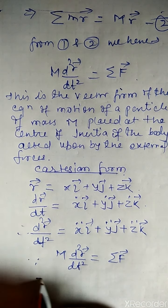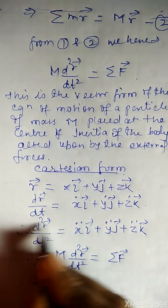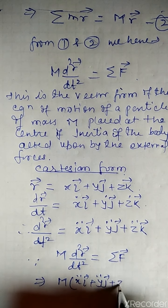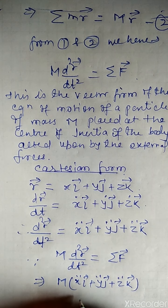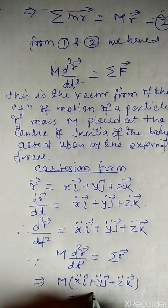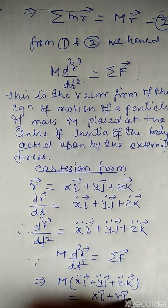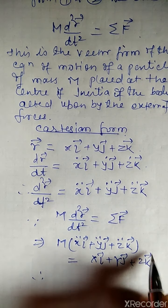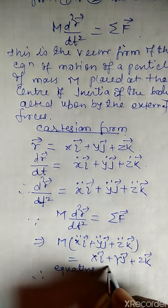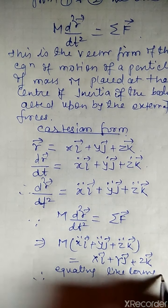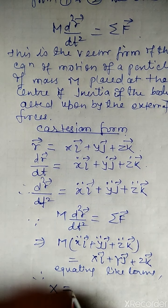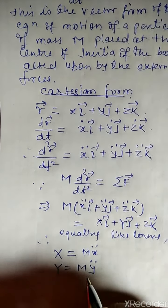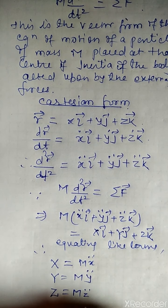Since M·d²R/dt² = ΣF, we place the value of d²R/dt² and get M(ẍi + ÿj + z̈k) = ΣF. Here ΣF = Xi + Yj + Zk. On equating like terms, we have X = Mẍ, Y = Mÿ, and Z = Mz̈.